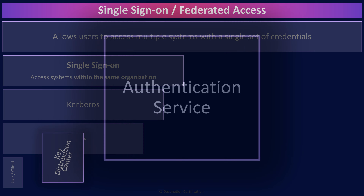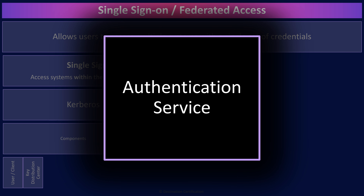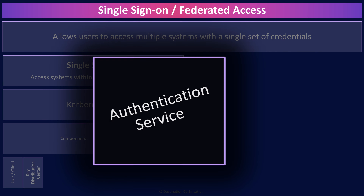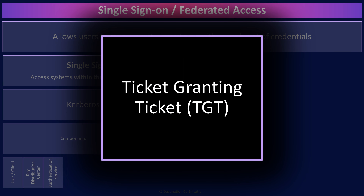When a user attempts to access a service via Kerberos, they first need to authenticate through the authentication service. The authentication service will check that the user exists and, if so, will send the user two tickets, one of which is known as the ticket granting ticket, the TGT. The ticket granting ticket is then passed on to the next component within the KDC: the ticket granting service.